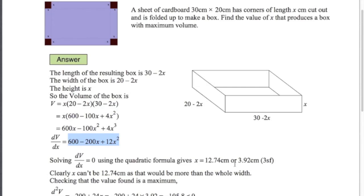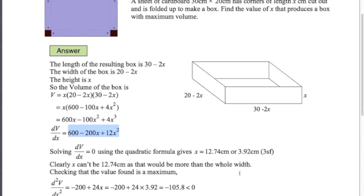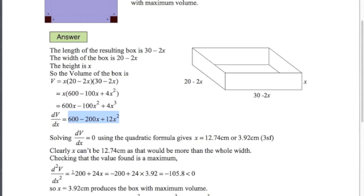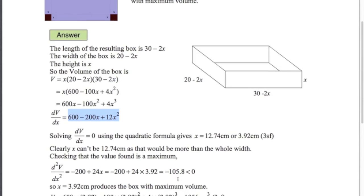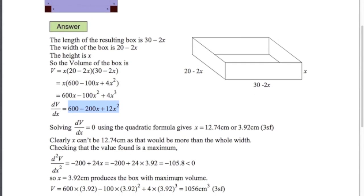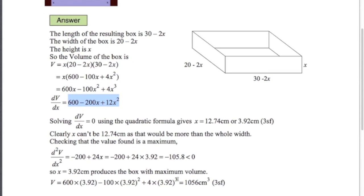3.92 looks like the best. Let's check with the second derivative. The derivative of the highlighted function gives minus 200 plus 24x. Substituting our value x equals 3.92 gives a negative value. A negative value for the second derivative means we've got a maximum, so this value of x produces a maximum volume. What is that maximum volume? Substituting 3.92 back into the original equation gives us 1056 centimeters cubed.